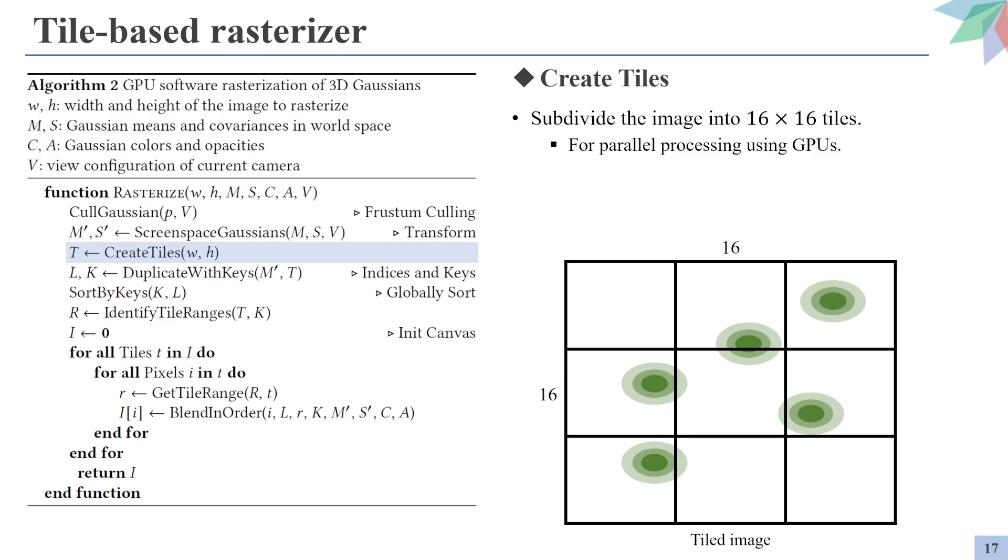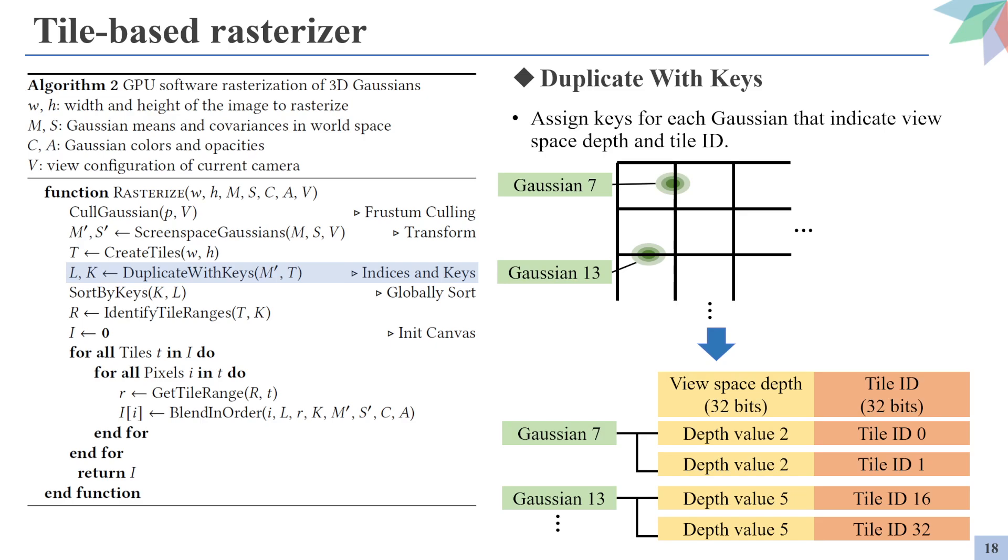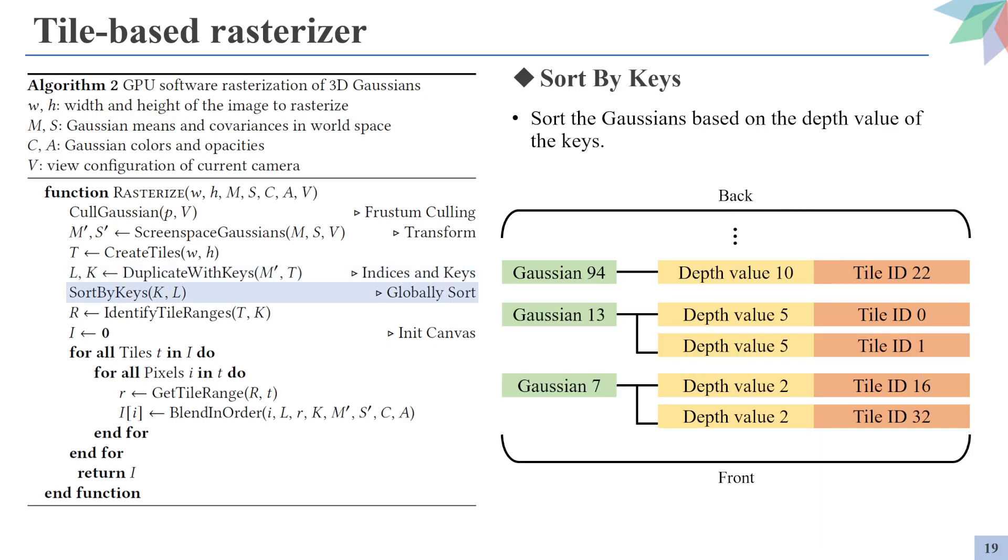After the Gaussians are splatted onto the images, the image is subdivided into multiple tiles, giving the rasterizer its name, tile-based rasterizer. The image is divided into 16 times 16 tiles, which utilize parallel processing of GPUs. In this section, the Gaussians are assigned keys that indicate its view space depth for all tiles that it covers. For example, if the Gaussian number 7 is located on the tiles of IDs 0 and 1, and the Gaussian number 13 is located on the tiles of IDs 16 and 32, the keys would be generated as below.